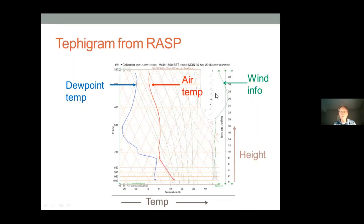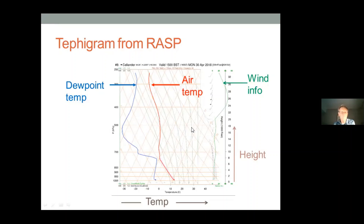There'll be another tephigram spat out at 1600 hours — that'll be a 21-hour forecast. So you can see the machines kicking out these tephigrams on a particular run. Always make sure if possible you're using the most up-to-date run and the highest resolution. RASP generates forecasts at various spatial scales, down to about 2 kilometres horizontal scale.